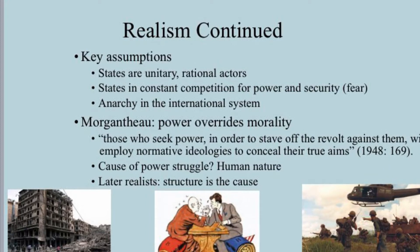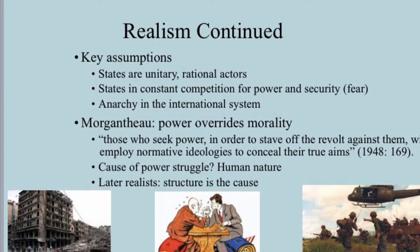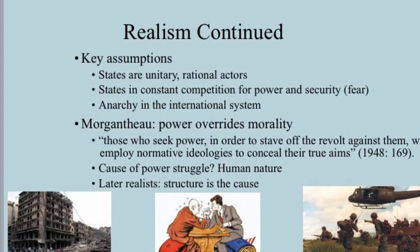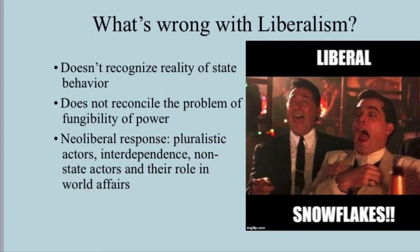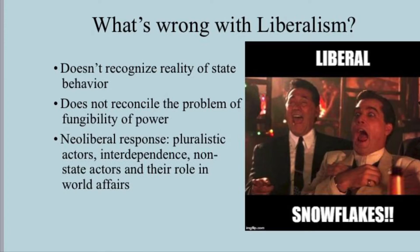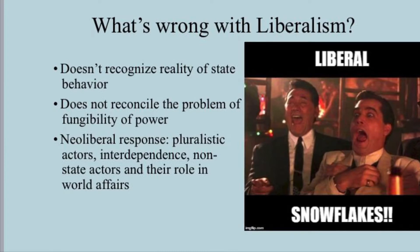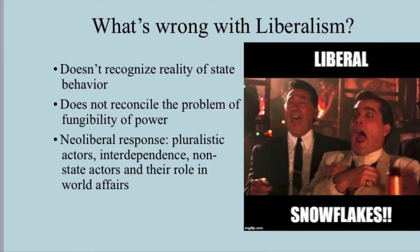Later, realists would argue that the structure of the international system is actually the cause of war and other events. The lack of authority to prevent war, or anarchy, is the important feature there. Most realists also register the same complaints against liberals, including an objection to liberals' view of state behavior as cooperative through institutions. They think liberals do not understand state motivations, that states who seek power would be compelled to violate these rules. In addition, states should not form institutions that assist other states through free trade, because helping other states get wealthy could backfire. This is due to the fact that power is fungible, meaning that power in one area, like the economy, can be transferred to another area, like the military.